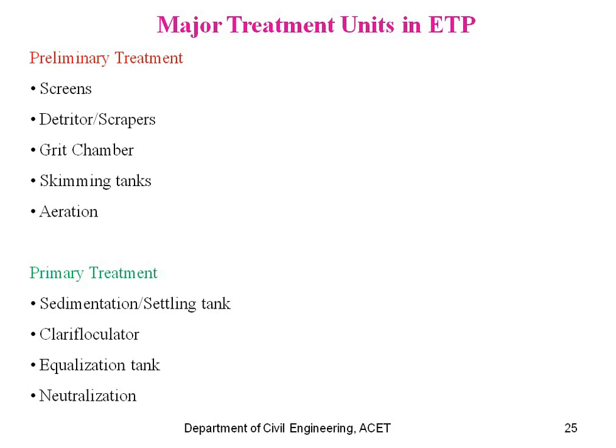The treatment units in ETP: in primary treatment, screens are used that do not allow unwanted sludge material to enter the treatment plant. Then detritors and scrapers remove colloidal particles or floating materials. Next are grit chambers, skimming tanks, and aeration — these are the areas where water is treated and made useful.